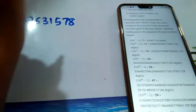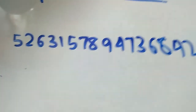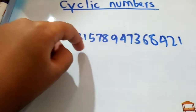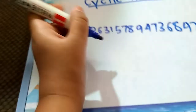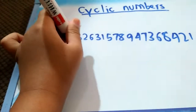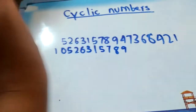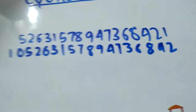The number is 052631578947368421. When you multiply this cyclic number by certain values, the result is a long string of repeating sevens followed by nines — which demonstrates its cyclic property. This copies out to: 105263157894736842.